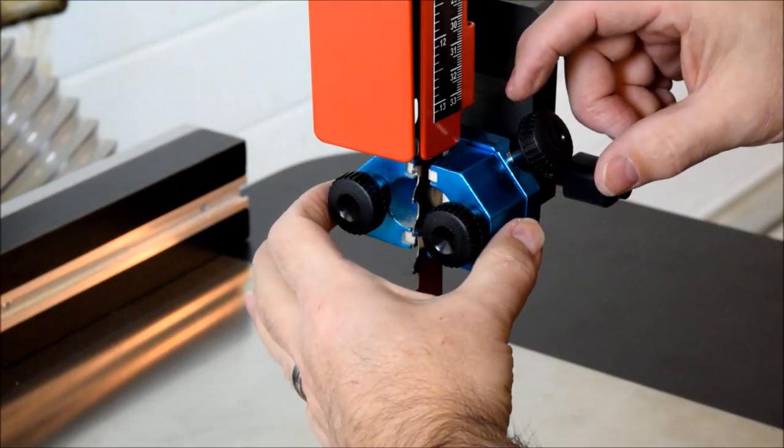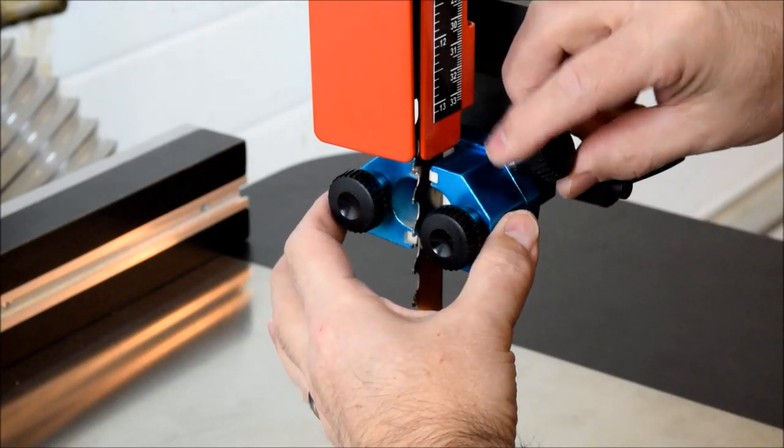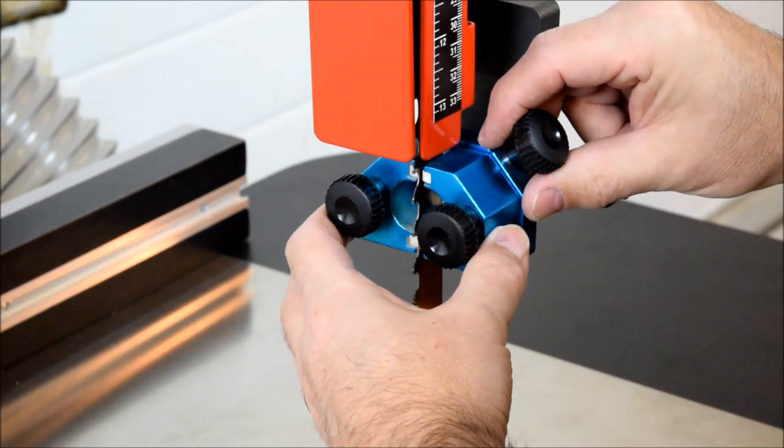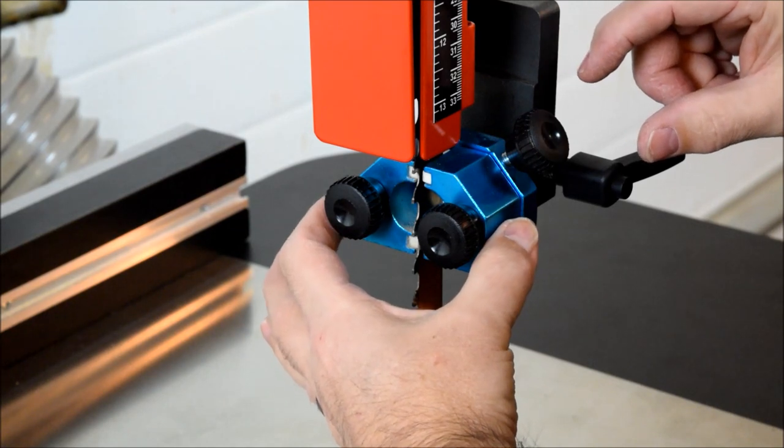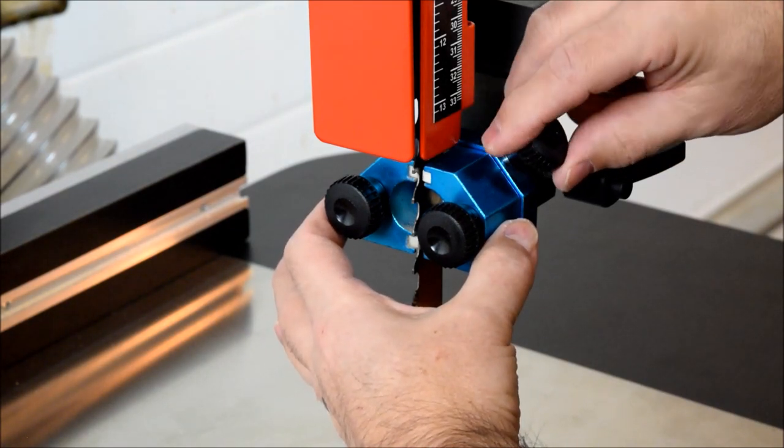And then I just gently pinch the guides in as I work this assembly forward and back until I feel like I have the ceramic guides just behind the gullet of the blade. In maintaining the slightest of pressure on the guides, I'll go ahead and lock in this knob.